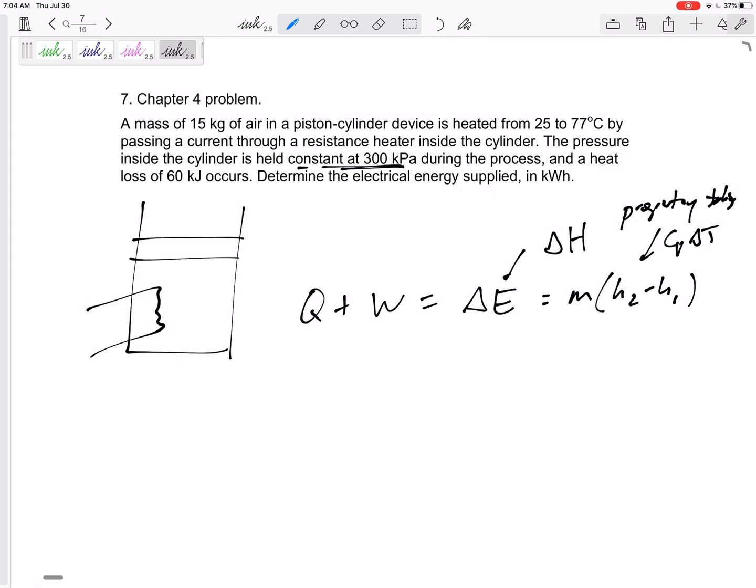We'll see. Alright, so where are some Q's and W's? A heat loss of 60 kilojoules. There's some work in by the resistance heater, and that's what we're trying to find. We're trying to find Win equals M delta H.